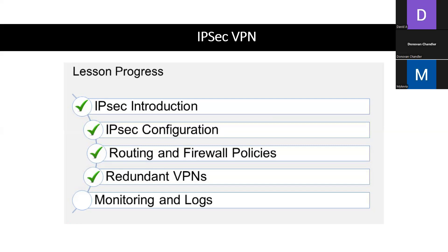Do you guys know what DPD is? Dead Peer Detection. It's going to continuously communicate with the peer, and if it doesn't get responses during a specific interval, it determines the IPsec VPN is down and needs to switch over, or log the event. Within redundant VPNs, DPD is mandatory to have configured.